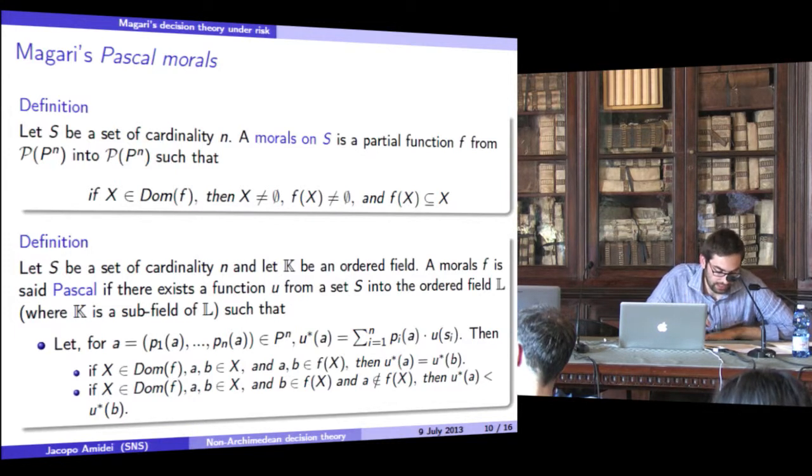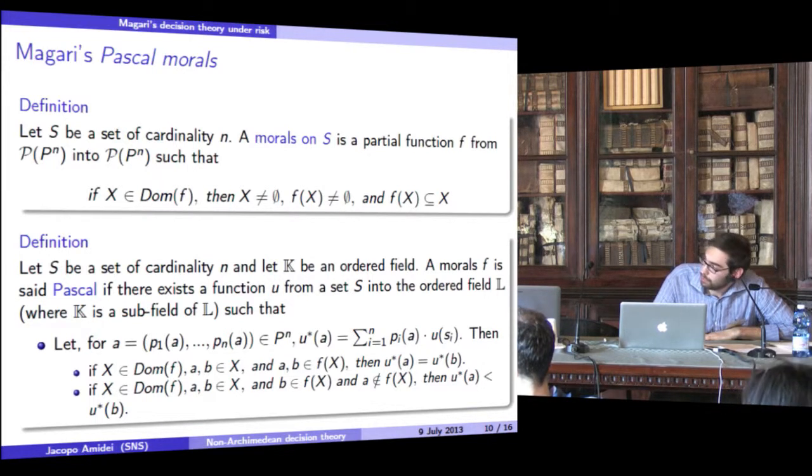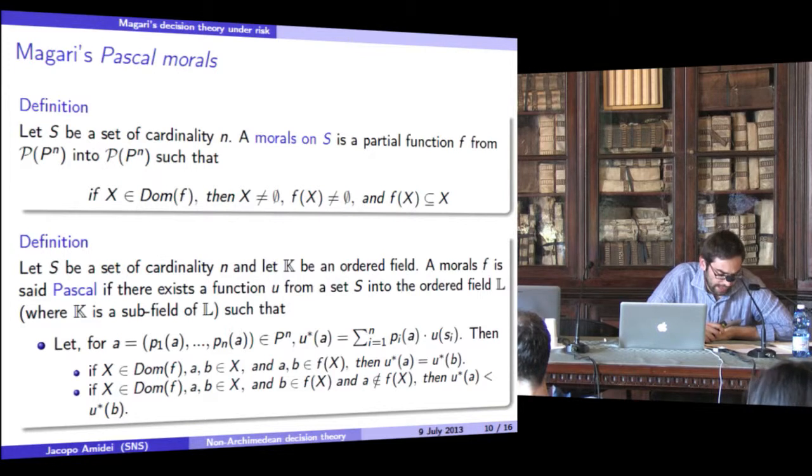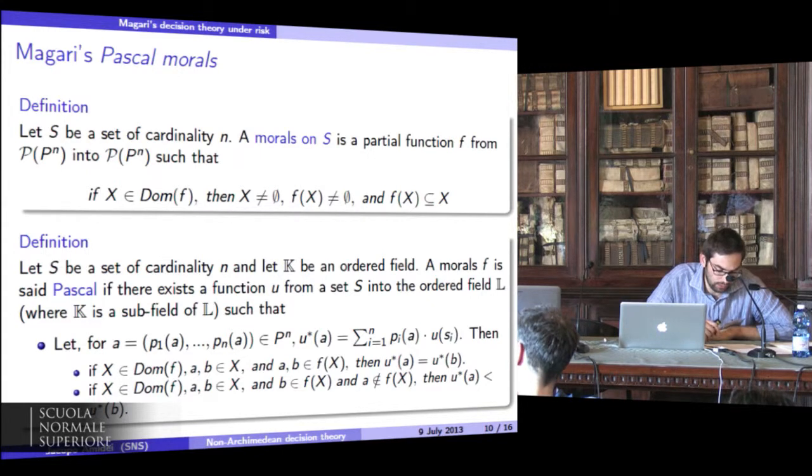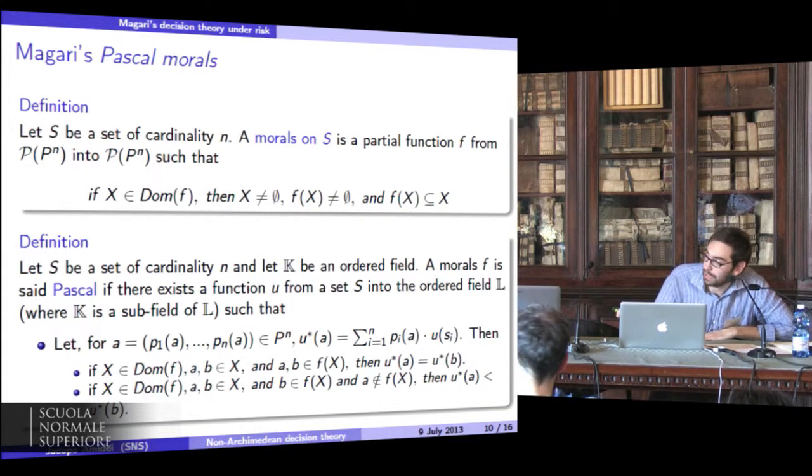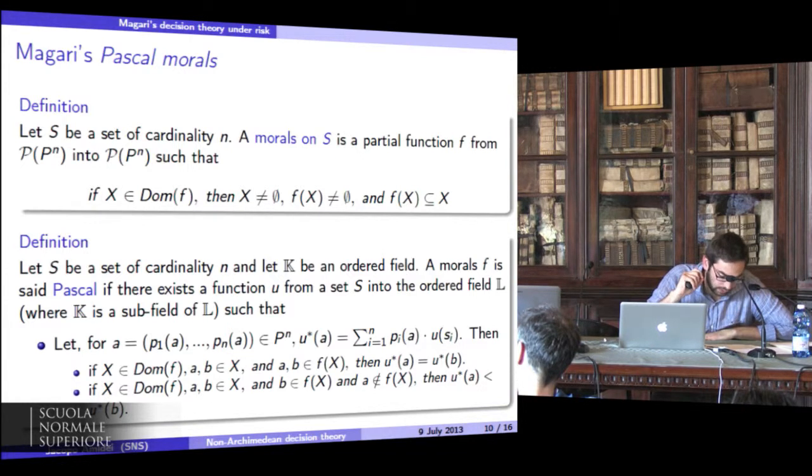A moral F is said Pascal if there exists a utility function U from S to an ordered field L, possibly non-Archimedean, such that if X belongs to the domain of F and A and B belong to F(X), and if X belongs to the domain of F and A and B belong to the set X, and B belongs to F(X) but A doesn't belong to F(X), then the expected utility of A is strictly less than the expected utility of B.